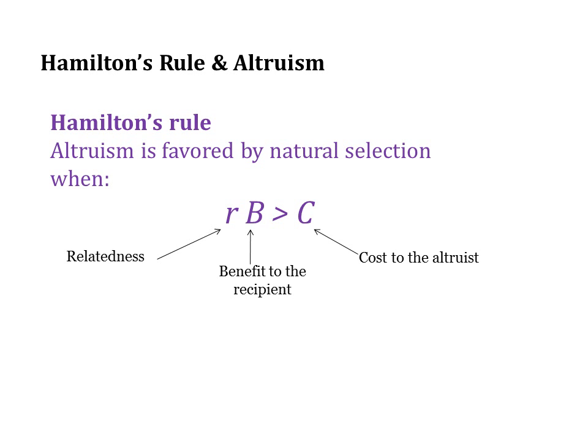Hamilton's Rule is an inequality that explains under which conditions altruism is expected to evolve in a population. Altruism is favored by natural selection when relatedness between an altruist and the recipient of altruistic behavior times the benefit to the recipient is greater than the cost to the altruist. Let's break this equation down a little more.